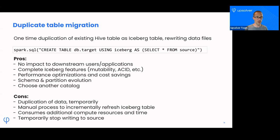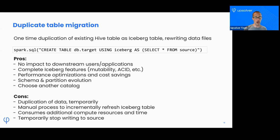You can also choose a different catalog, because it doesn't use those two migration functions. You can say, I want to write this into an Iceberg table in a completely different catalog — for example, going from Hive to Glue, or from Hive to Snowflake Polaris.